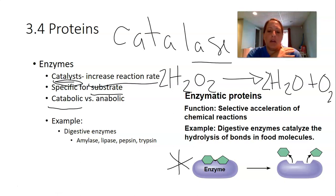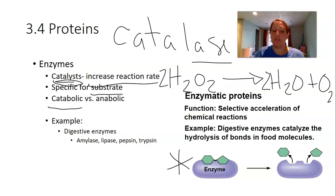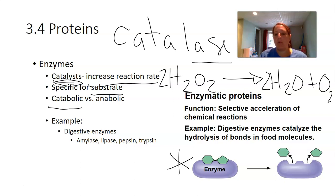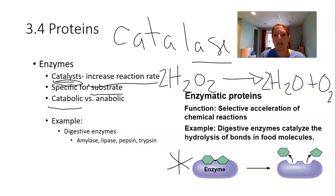In lab, you're going to be adding catalase — from an organism — to a mixture and watching this reaction happen. You'll be testing the effect of substrate concentration (hydrogen peroxide) and pH on the rate of that reaction. The lab supply list on Blackboard includes hydrogen peroxide, which is in short supply right now, so try to get it sooner rather than later.